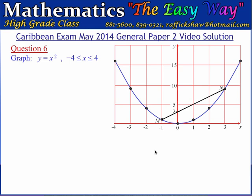We are now at question 6 of this CSEC May 2014 general paper 2 exam video solution. In this question we are given a graph of the quadratic function y equals x squared over the interval of the domain from negative 4 to 4.